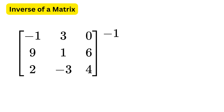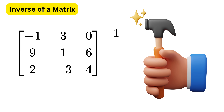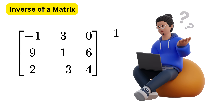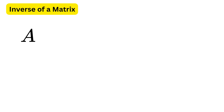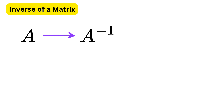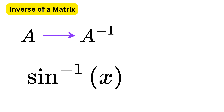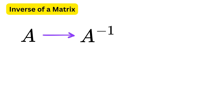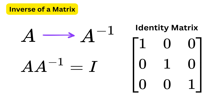Before we end this video, let us learn about the inverse of a matrix — one of the most powerful tools in linear algebra, but also something many students find difficult at first. If the matrix is A, then we represent the inverse as A raised to minus 1. This doesn't mean we are dividing 1 by A like regular numbers; it's just a way to represent the inverse. The most important property is: if a matrix has an inverse, then multiplying the matrix with its inverse gives the identity matrix — A times A inverse equals I, and A inverse times A equals I.